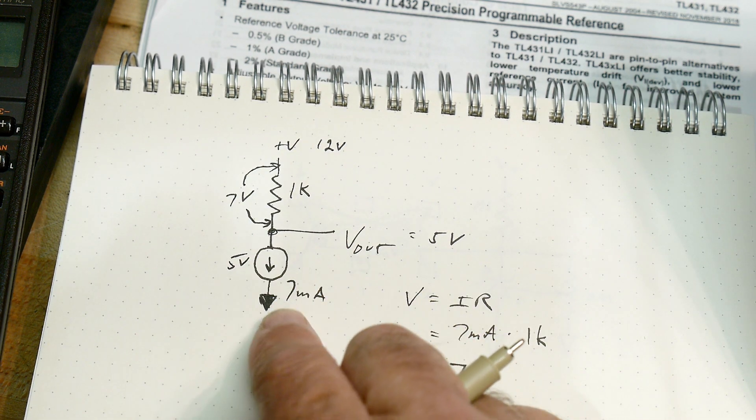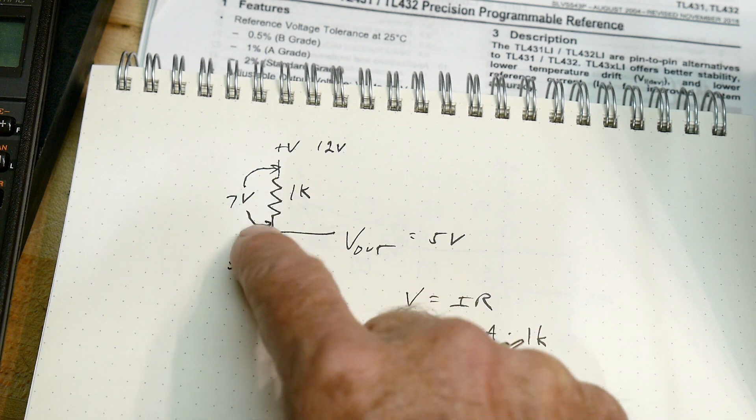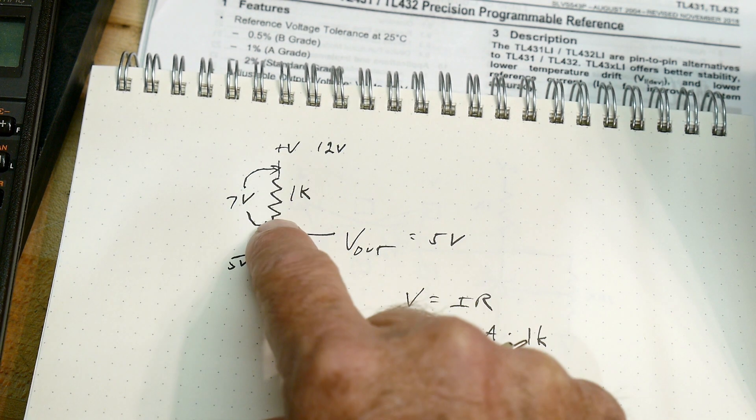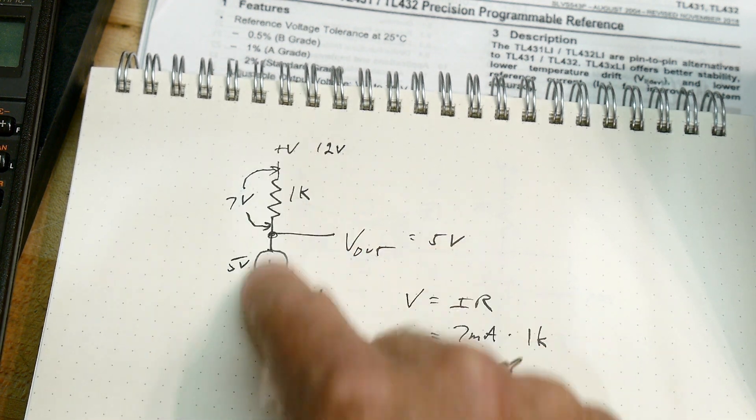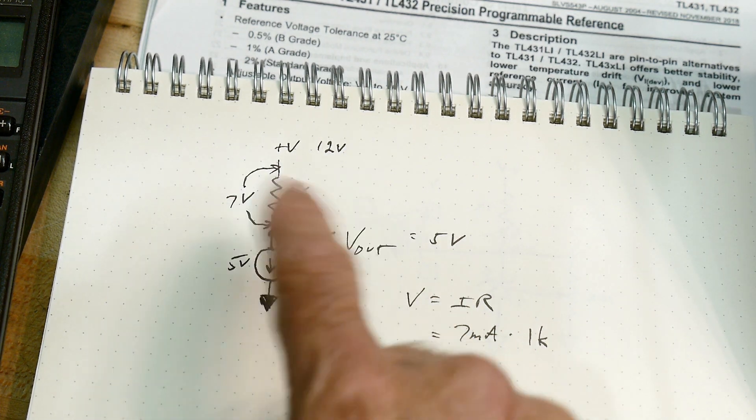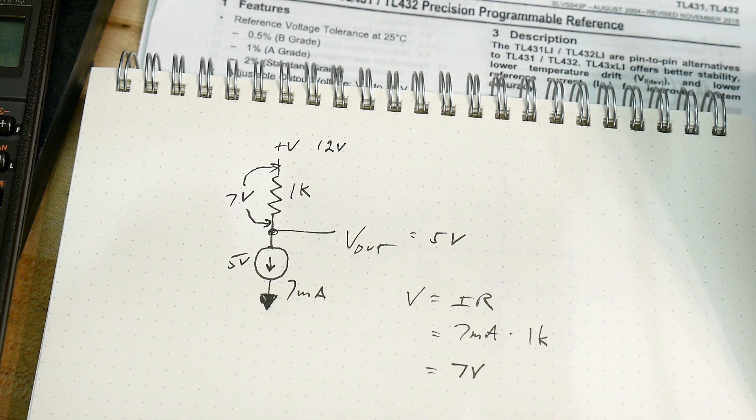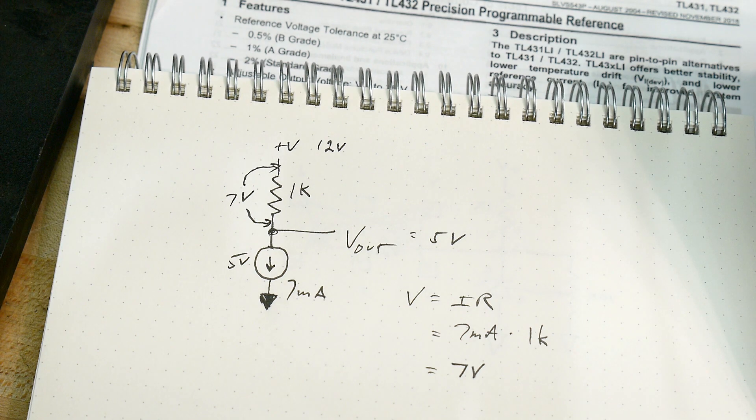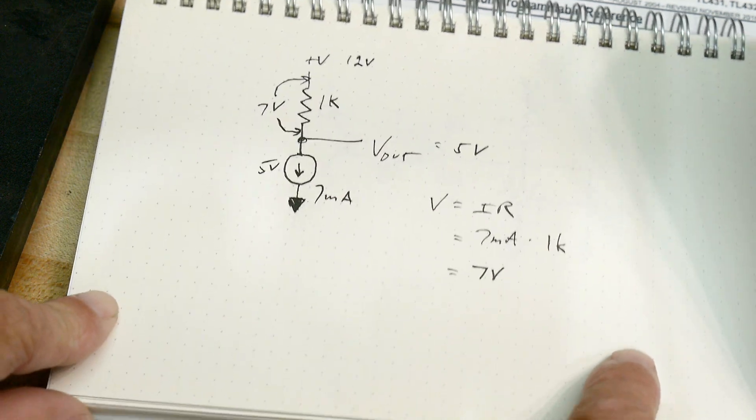So I hope that makes sense. You might want to pause the video, go back and check all of this. If you have 1k resistor with 7 milliamps going through it, you'll have 7 volts across the resistor, but you have 12 volts across the whole thing. So you're going to have to have 5 volts here in order to satisfy the equation. Okay, so that's one concept.